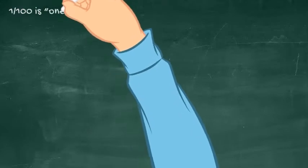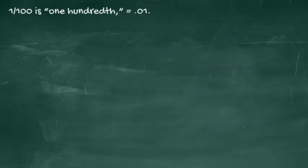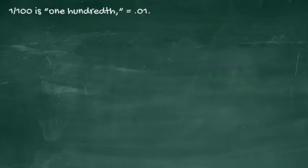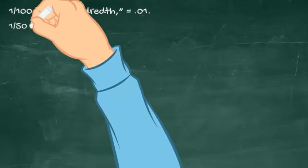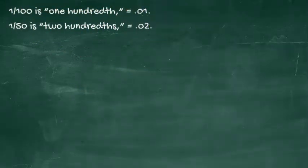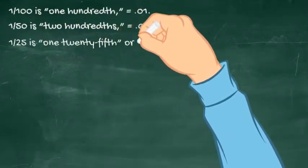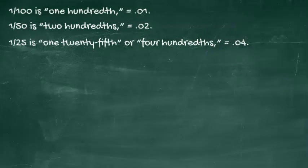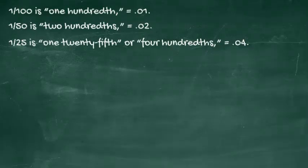1 over 100 is one hundredth, expressed as a decimal it's 0.01. 1 over 50 is two hundredths, expressed as a decimal it's 0.02. 1 over 25 is one twenty-fifth, or 4 hundredths, expressed as a decimal it's 0.04.